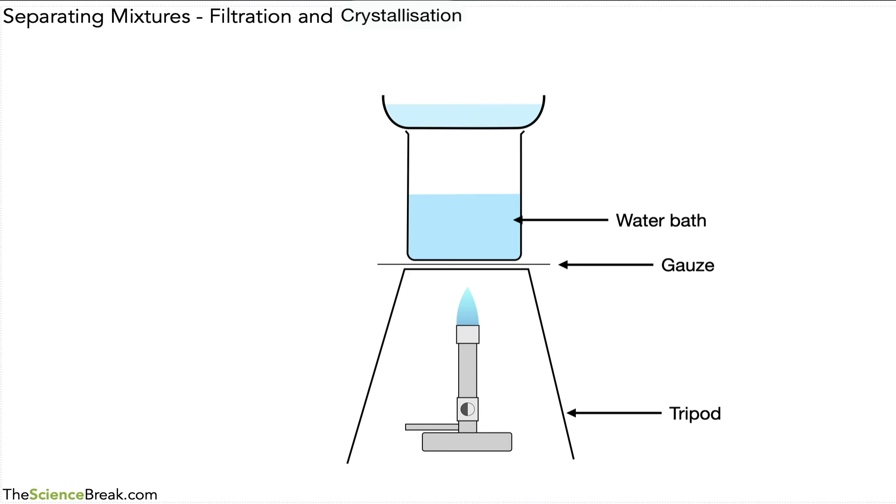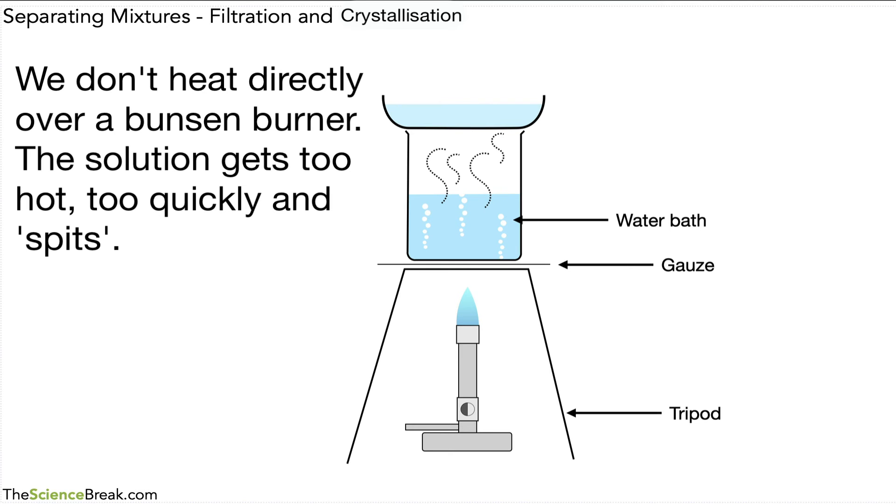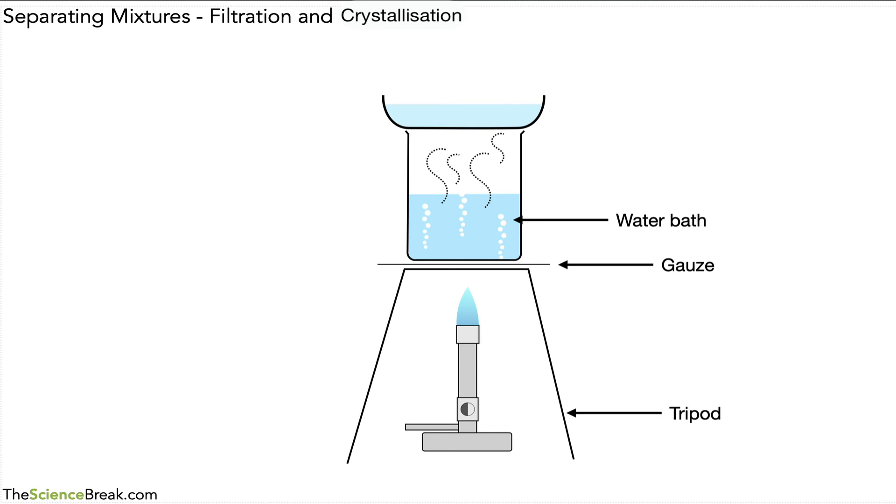We can start to evaporate off some of that water. So we heat gently. The heat from the water bath will heat our solution, and if you look carefully at the evaporating basin, you'll see that some of it evaporates away. We are now left with a more concentrated solution.